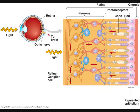Retinal ganglion cells, or RGCs, are the innermost neurons, with bipolar cells synapsing with their dendrites. After receiving information from bipolar cells, retinal ganglion cells transmit that information via action potentials along their axons to the brain.